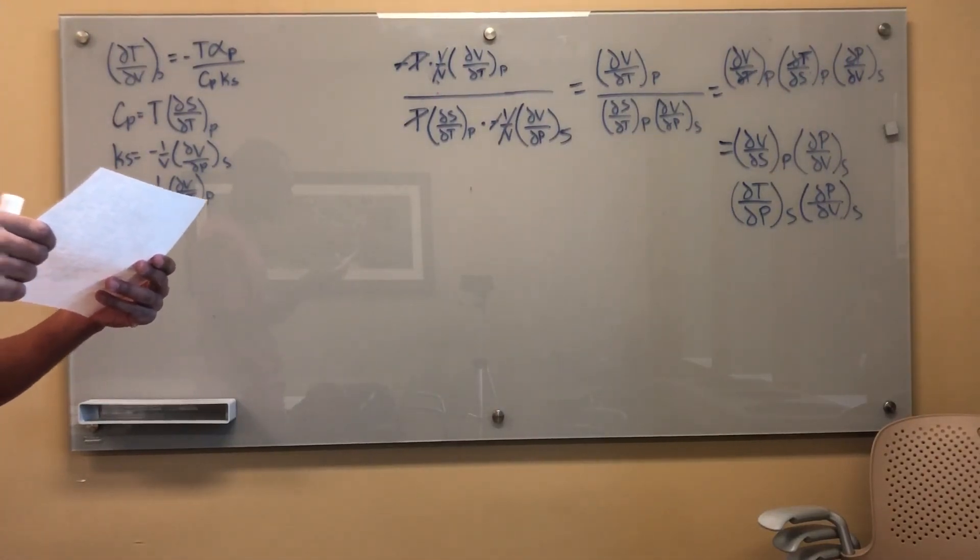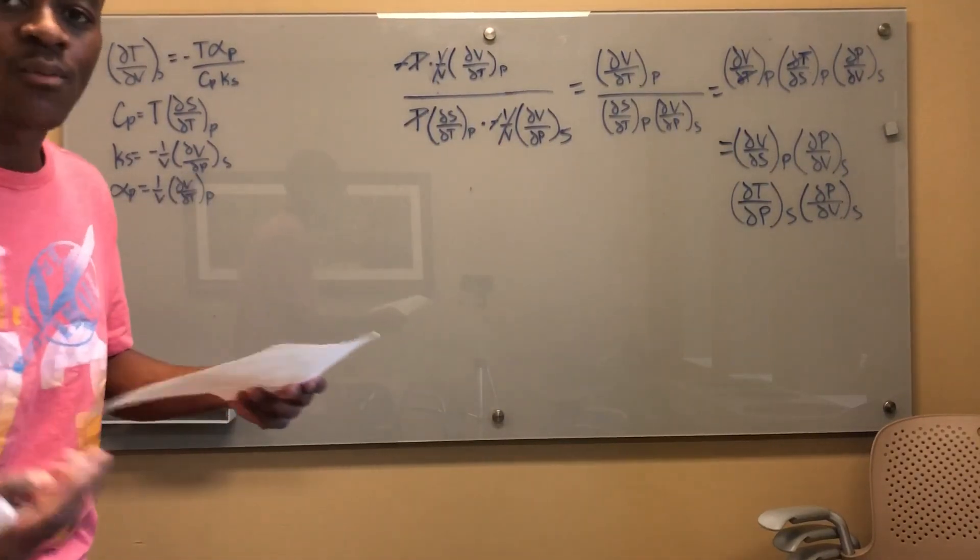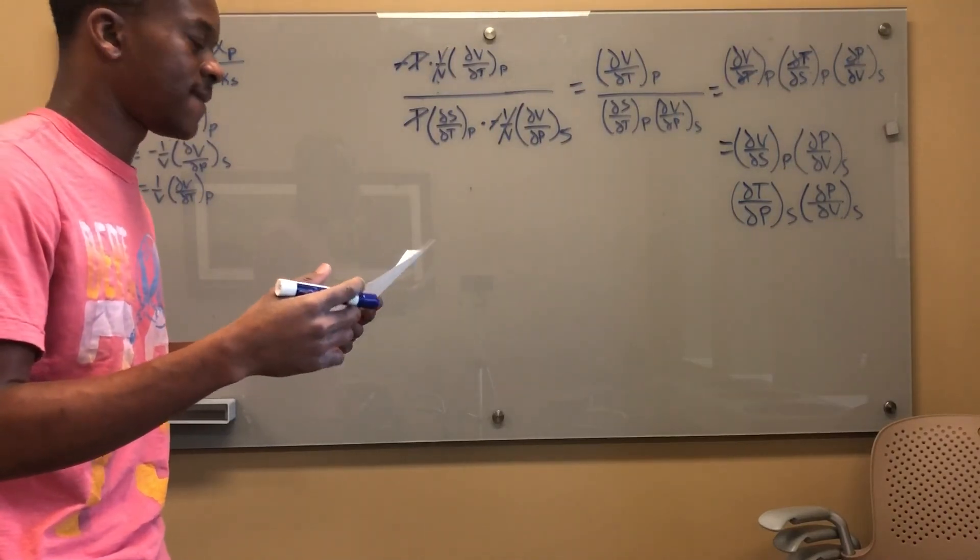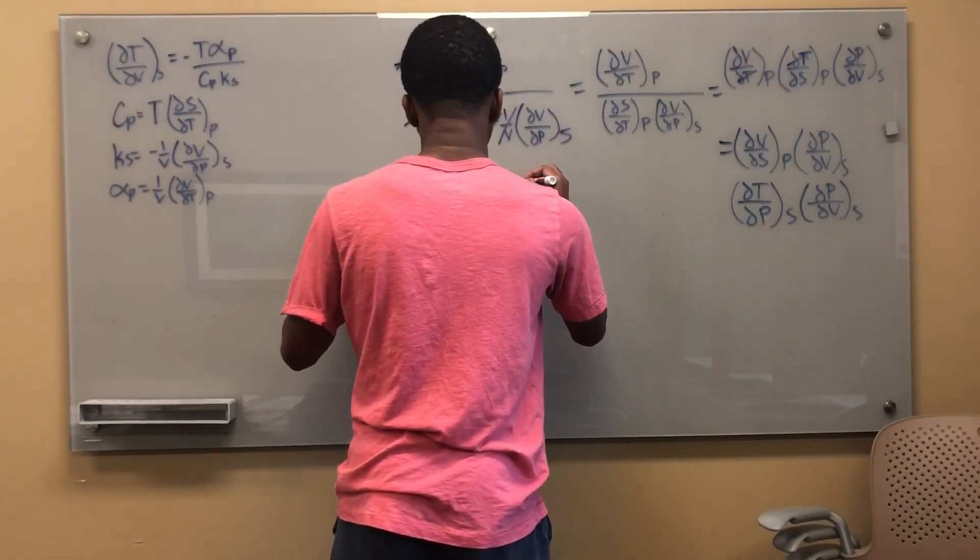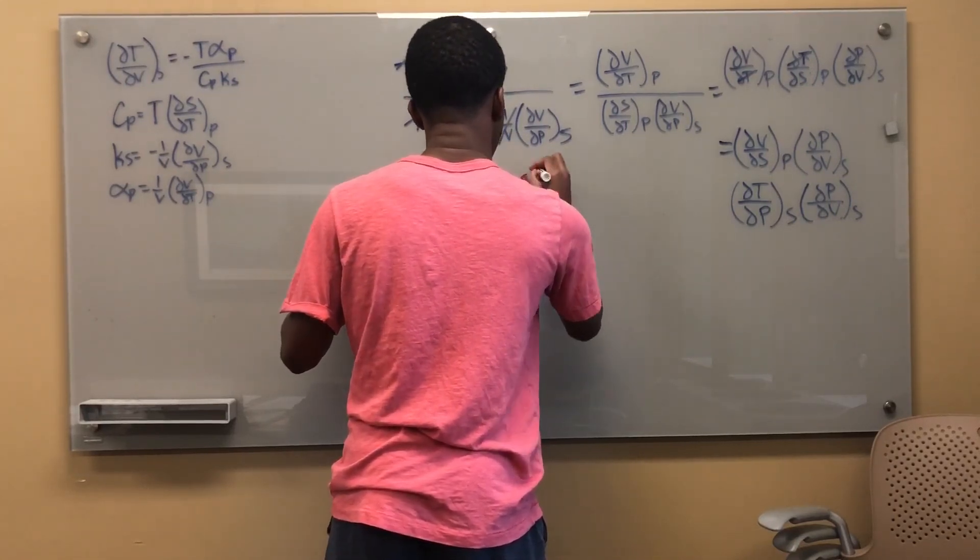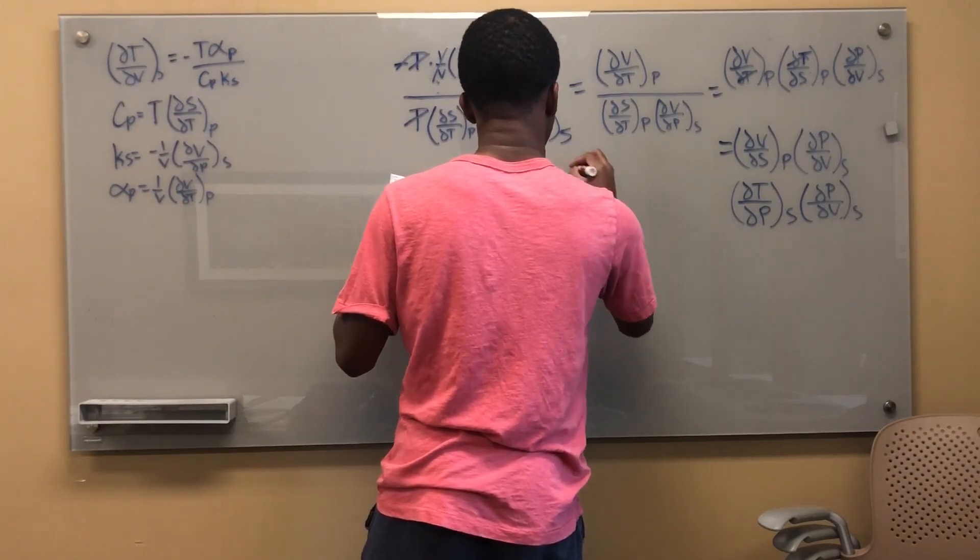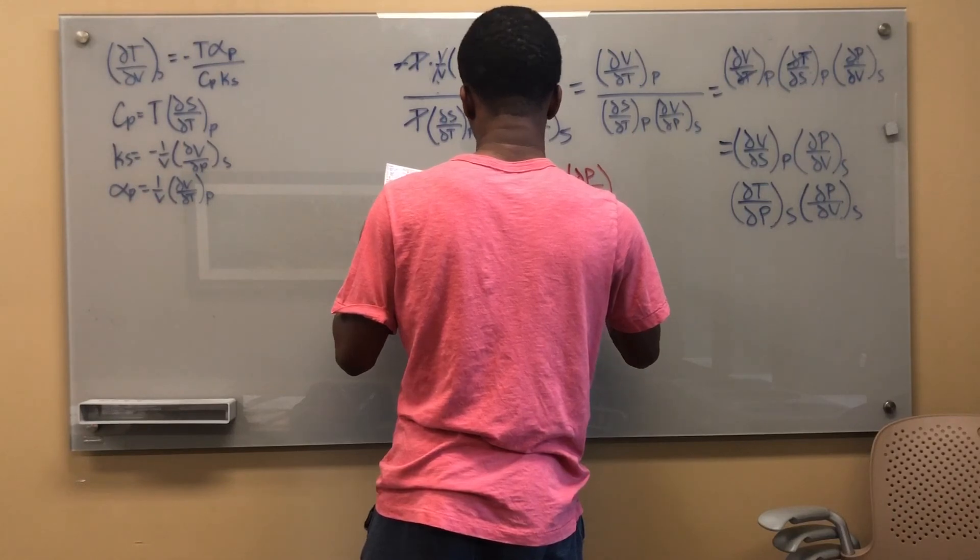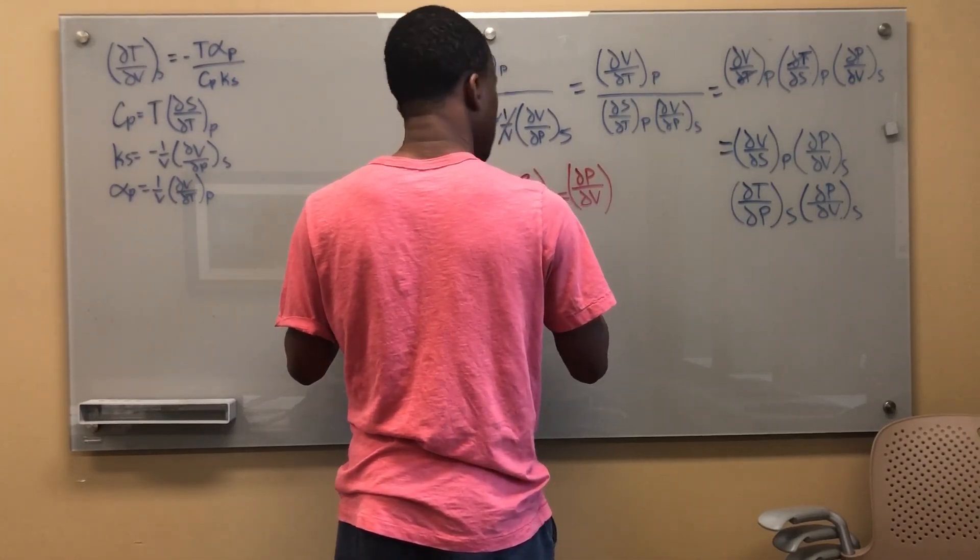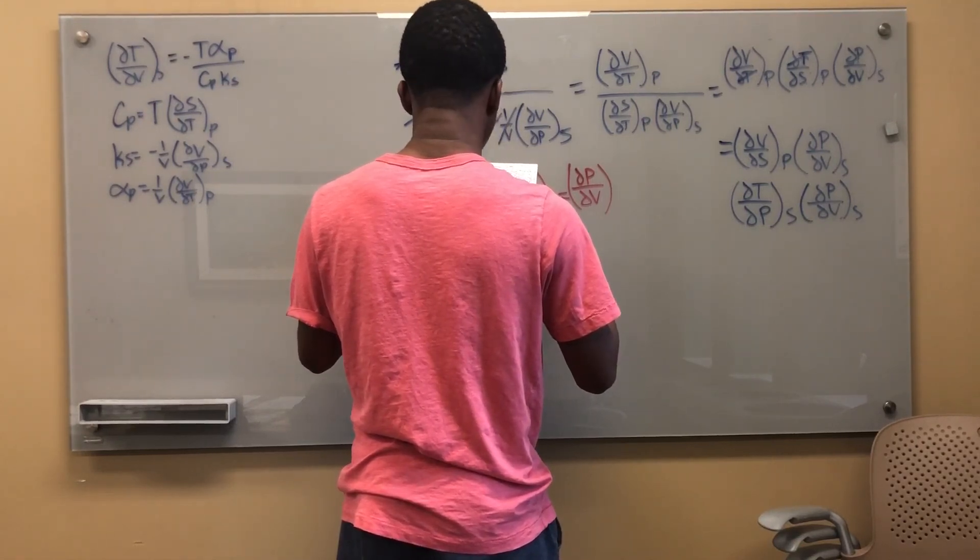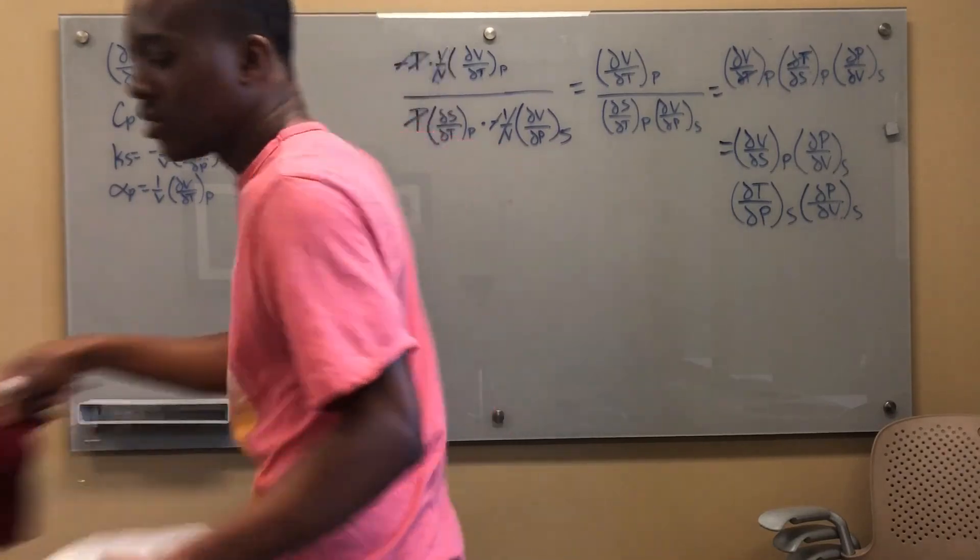So yes, I can see that del S del V at constant T is equal to del P del T at constant V. And likewise, I can flip those as well. So basically my Maxwell relation says this. Del S, del V at constant T is equal to del P del V at constant, I'm sorry. It's del T del S, right? That's what I'm looking for. No, I'm sorry. Give me two seconds.